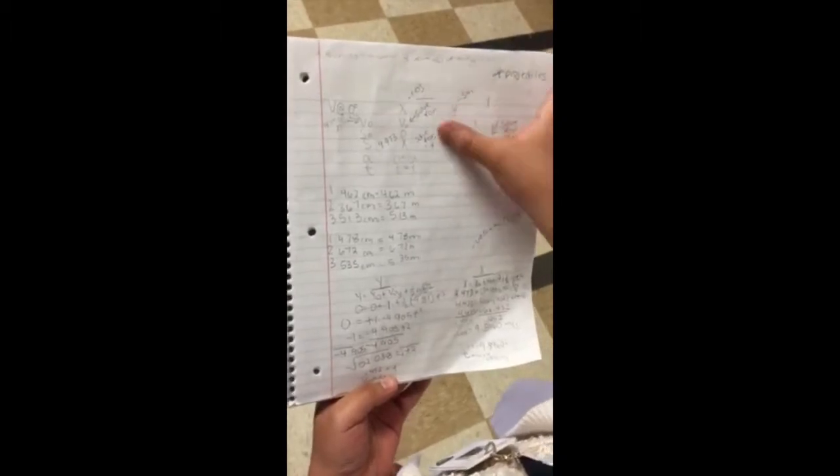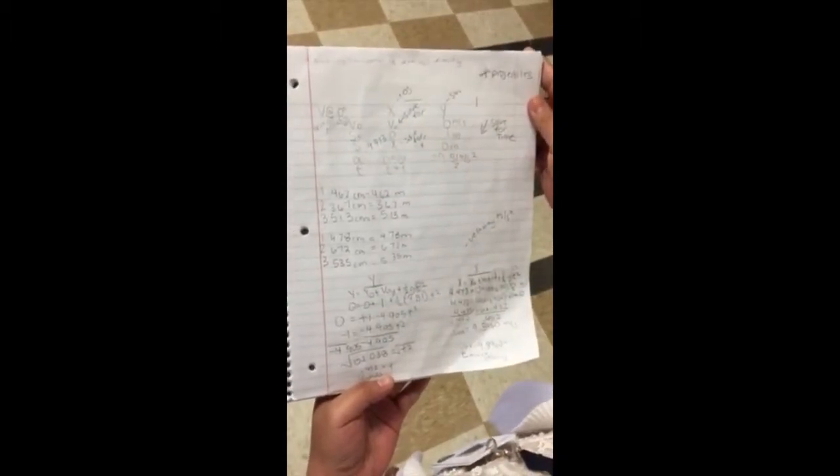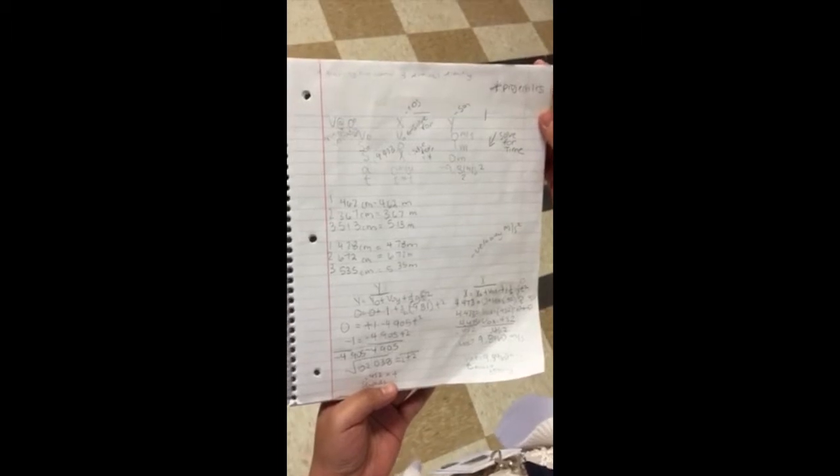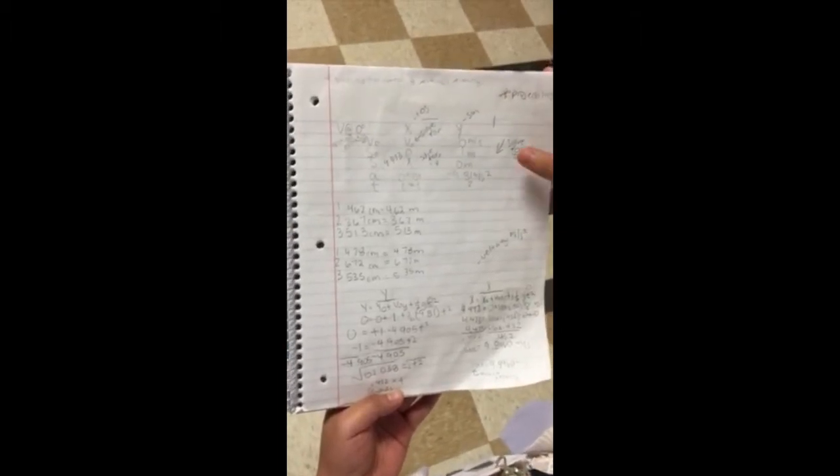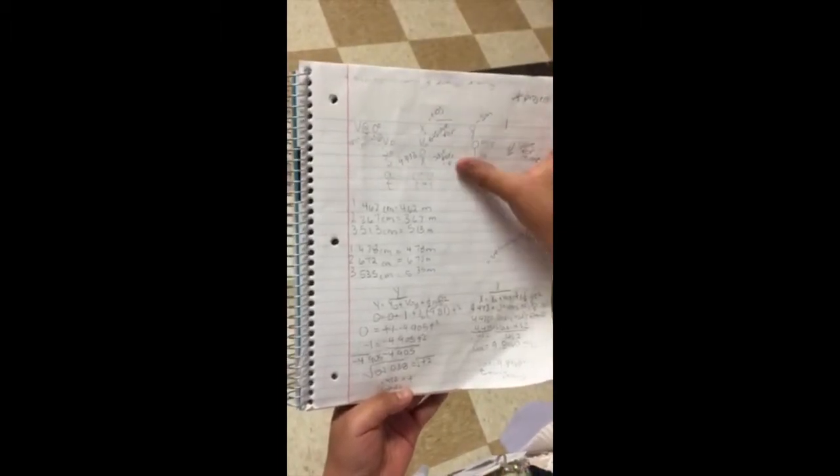So then you do v₀, sine θ, a, and t. And then basically for your x-value, you're solving for the v₀, which is initial velocity, and you're solving for your x. So what you would have to do is you have to do your y first. And you're solving for time, so when you figure out time, you can plug it into the equation for x.